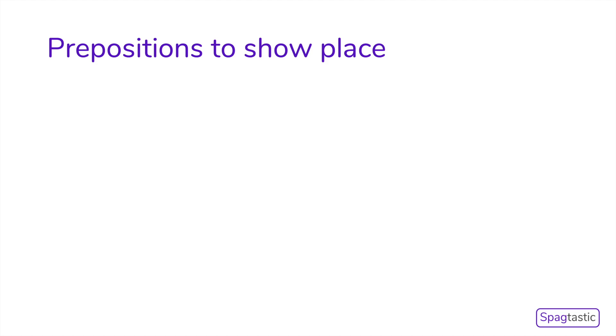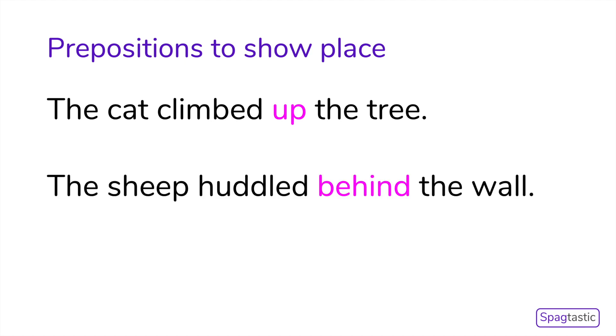Here are some examples of how we can use prepositions to show place. In the sentence, the cat climbed up the tree, the preposition up tells us where the cat climbed. In the next example, the sheep huddled behind the wall, the preposition behind tells us where the sheep huddled.